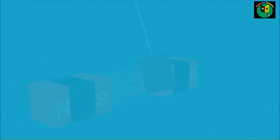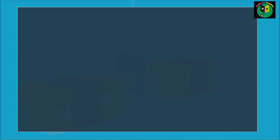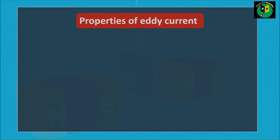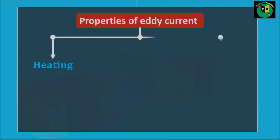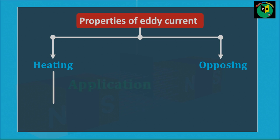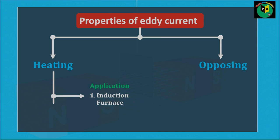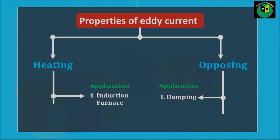Hello friends, welcome back to our channel Physics and Animation. Till now, we have studied about Eddy Current, and we know that Eddy Current have two basic properties: one is heating and another one is opposing. In the last video, we already discussed the application of Eddy Current in Induction Furnace. Today in this video, we will talk about the opposing property of Eddy Current — first how Eddy Current produces a damping effect, and then the application of Eddy Current in braking systems.